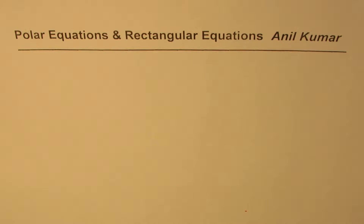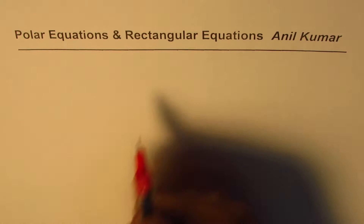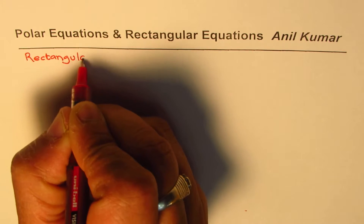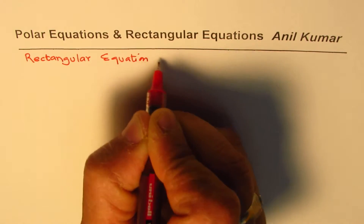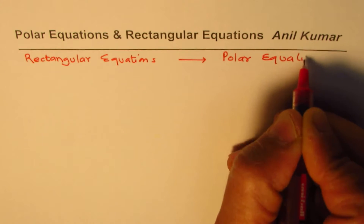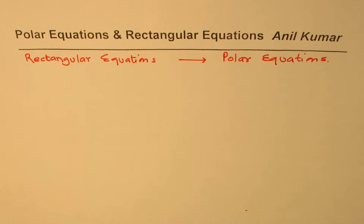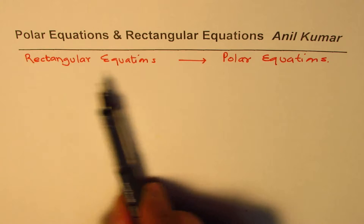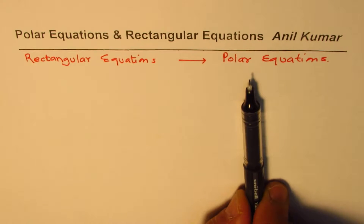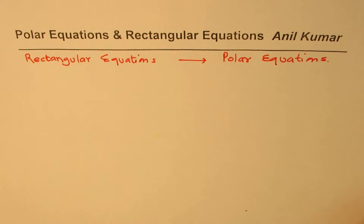I'm Anil Kumar. In this video we'll try to understand how to write polar equations from rectangular equations. Our concentration here will be to write some rectangular equations as polar equations. The reason for doing this is that we understand rectangular equations — if I write an equation, you know exactly this is the equation of a line, this is the equation of a circle, and so on. If we can translate rectangular into polar equations, you will know how that graph looks when represented in polar form.